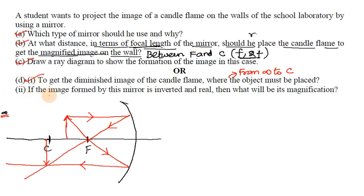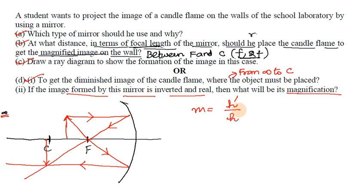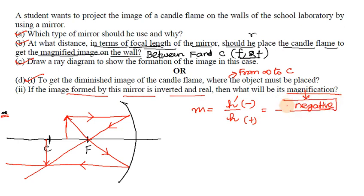Question 2: if the image formed by this mirror is inverted and real, what will be its magnification? The magnification formula is m = h'/h. Since the image is real and inverted, h' is negative and h is positive, so the magnification will be a negative value.